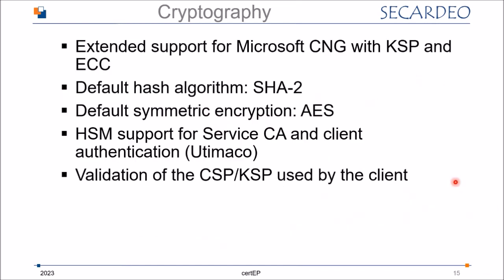We have other innovations in 30P version 6: extended crypto support for CAPI2 (Crypto Next Generation). We support KSPs and elliptic curves. We use SHA-2 as the default hash algorithm — in the past this was SHA-1 as Microsoft did. We also replace Triple DES encryption with AES encryption. We offer HSM support for the service CA and client authentication. Additionally, CertiP can validate if the correct CSP or KSP has been used, since you can define in the template which CSP or KSP should be used.